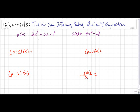Here I have p(x) equal to 2x cubed minus 3x plus 1, while s(x) equals 4x cubed minus 2.